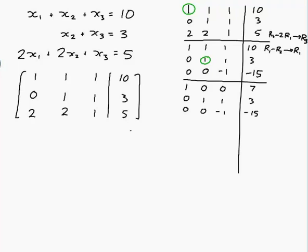Already you can see we've got an equation here. If we translate this back to an equation, it would be 1x1, 0x2, 0x3 equals 7. So actually x1 is 7, which we've already found out so far.